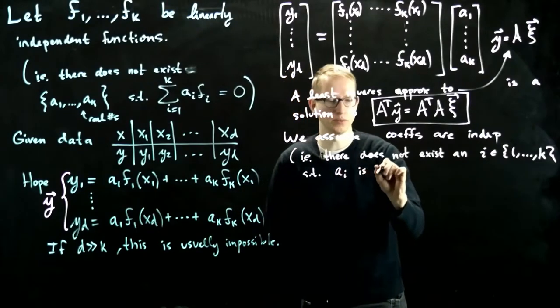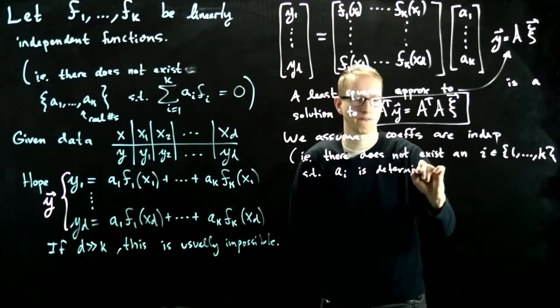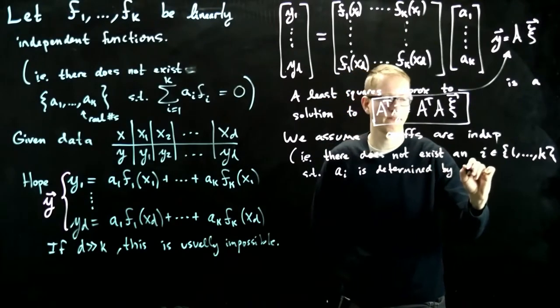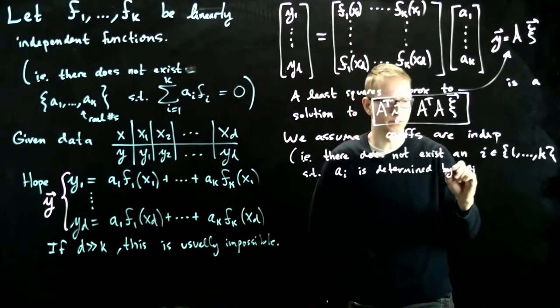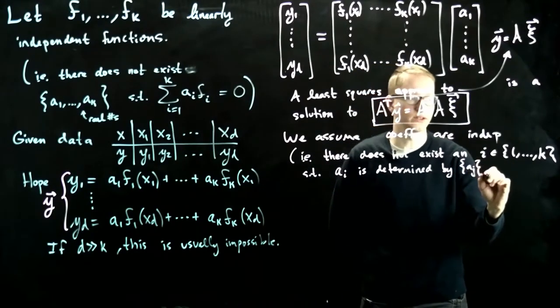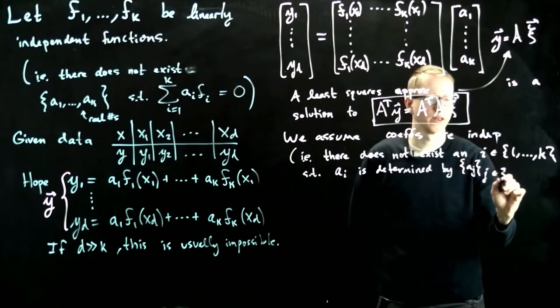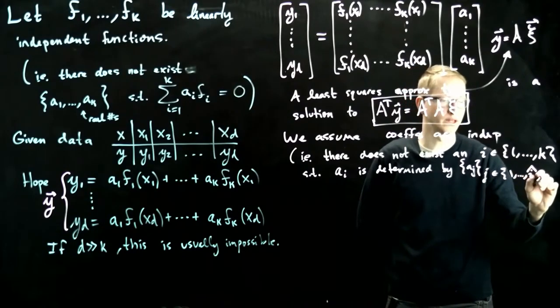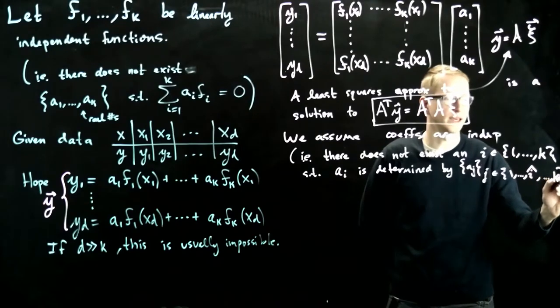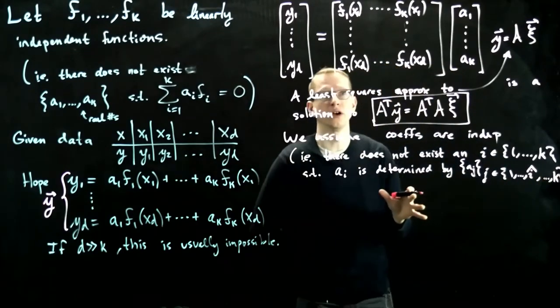ai is determined by all the other aj's. So let's just say the set of aj's, where j is now from 1 excluding i, so I write a little hat over that, to exclude i up to k. So in other words, in terms of all of the other coefficients.